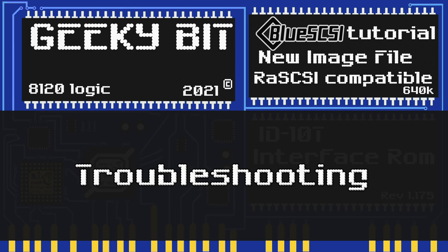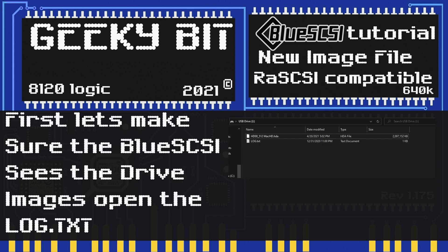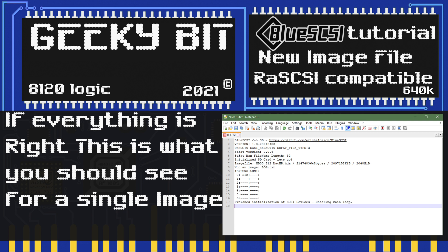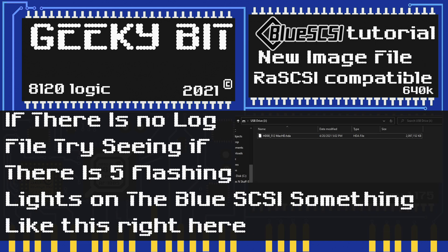You've done everything just like I showed you in this tutorial but somehow it's still not working - this section is for troubleshooting. Let's put our SD card back in our computer and see if a log file was written. As you can see in this image, that's what it should look like if a log file was written. Let's open up that log file and examine it. If we open up the SD card but have no log file and see some flashing lights on our BlueSCSI, we probably have some other issues.